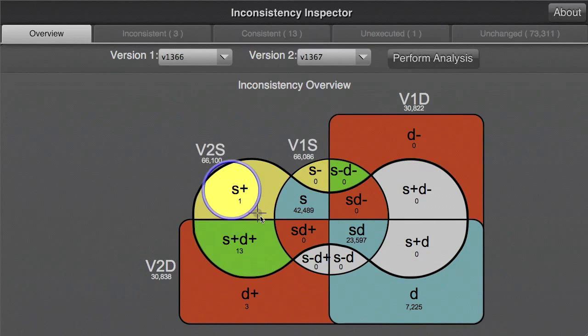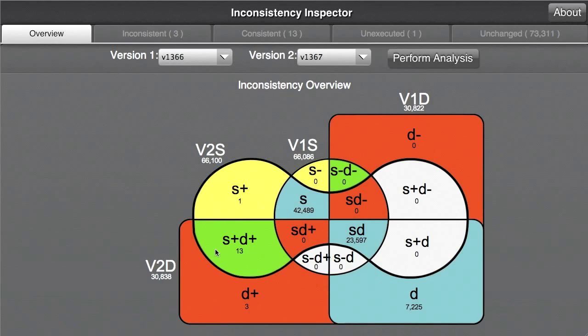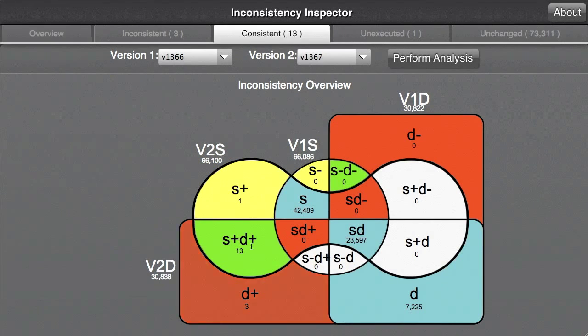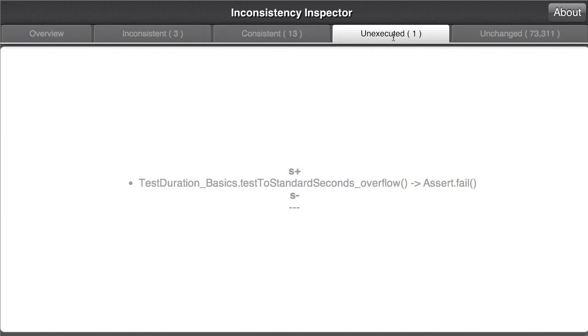Comparing two adjacent versions, we immediately noticed that while 13 changes were captured by the consistent S plus D plus partition, one modification was not dynamically executed, appearing in the S plus partition. The developer can then select the partition to see what element failed to execute and determine if this was intentional.